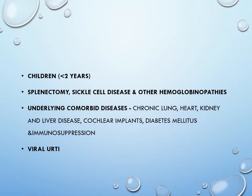Underlying comorbid conditions such as chronic lung disease, heart disease, kidney disease, or diabetes mellitus also put a person at risk. If there is a viral upper respiratory tract infection, you can also have bacterial co-infection. This is the reason antibiotics are given during viral infections — not to act on the virus, but because immunity goes down and simultaneous bacterial infection can occur.